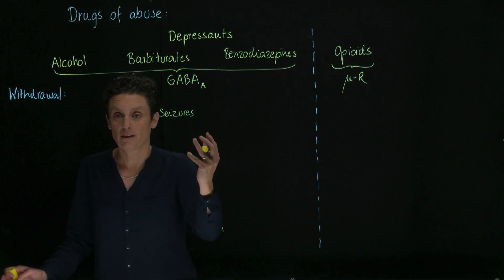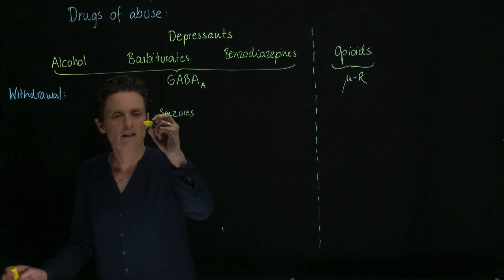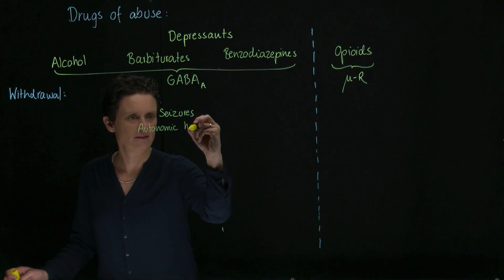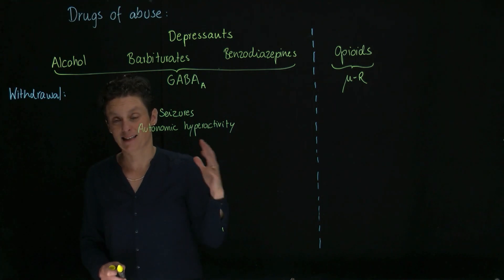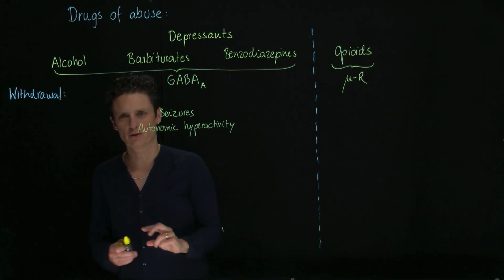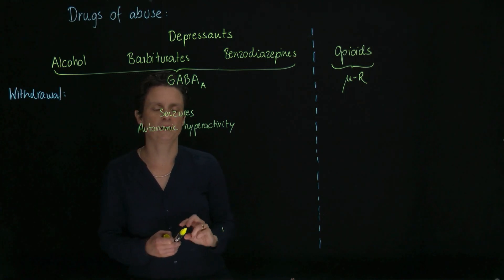Withdrawal usually leads to autonomic hyperactivity for most drugs because you're in fight and flight. You want the drug very badly. So you're going to have symptoms like tachycardia, tremor, blood pressure goes up. Just autonomic hyperactivity.